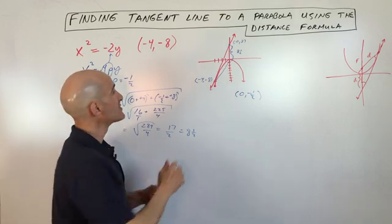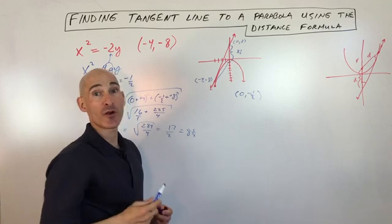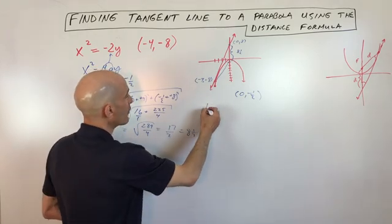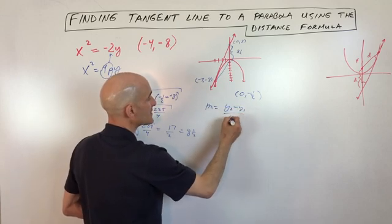Now the only thing we need to figure out now is the slope of the tangent line. We already have the y-intercept and we'll be able to write our equation. So to find the slope, we're going to use the slope formula, which is y2 minus y1 over x2 minus x1.